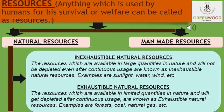Inexhaustible natural resources are those present in nature in unlimited quantity. We can use them widely and they are not likely to be exhausted by human activity. Examples are sunlight and air — these are present in unlimited quantities and cannot be exhausted, so they are called inexhaustible natural resources.